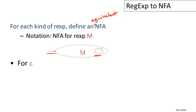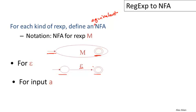For the epsilon regular expression, we just have a start state and a final state with an epsilon transition between them. This machine accepts exactly the empty string. Similarly, for a single character 'a', we can define a one-transition, two-state machine that accepts that one character. From the start state, we can move to the final state if and only if we read that particular character.